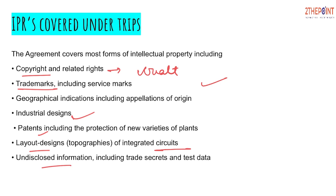The last category is undisclosed information, or trade secrets. Many companies hold their own trade secrets — for example, Coke and Pepsi. Their recipe or method to produce their beverages has been secured and is never leaked. That is extremely valuable information, because if it were leaked, any other soft drink company could replicate the flavor. This trade secret holds value of millions and is also given protection under IPR and TRIPS.